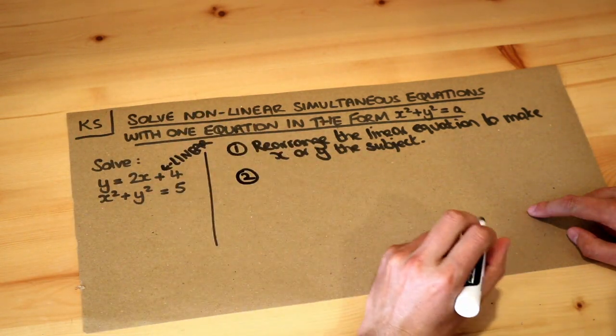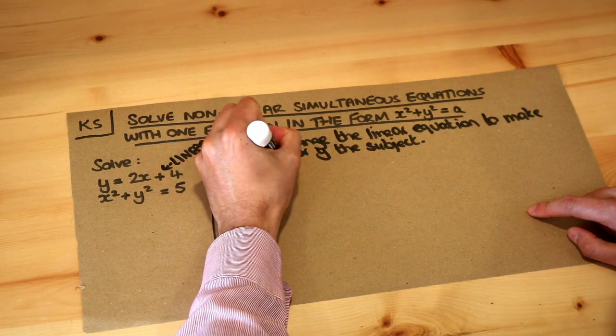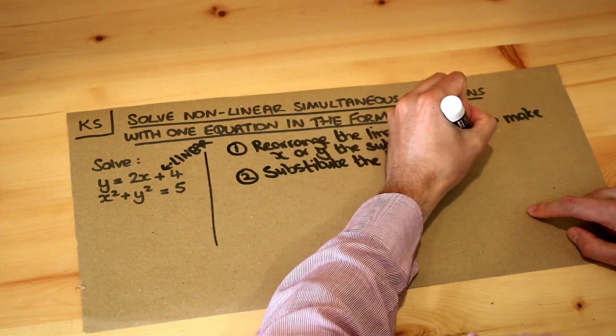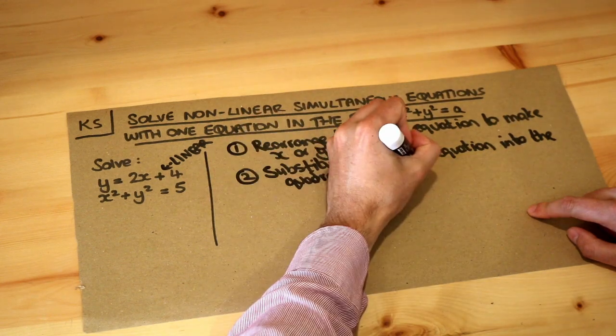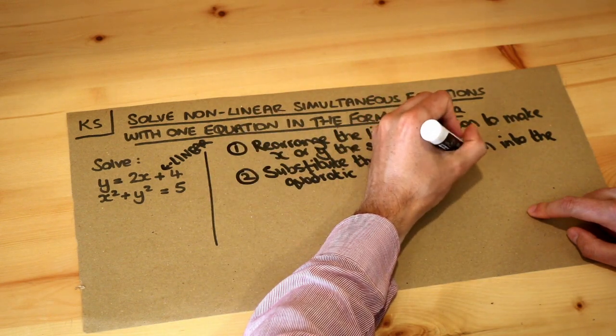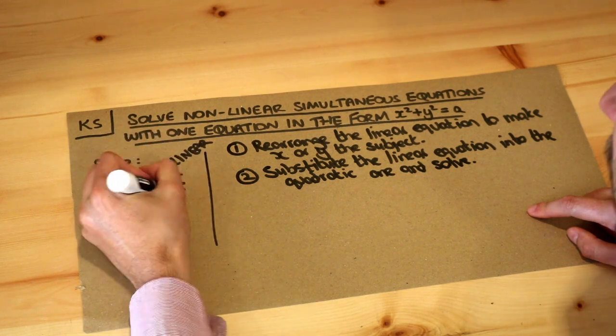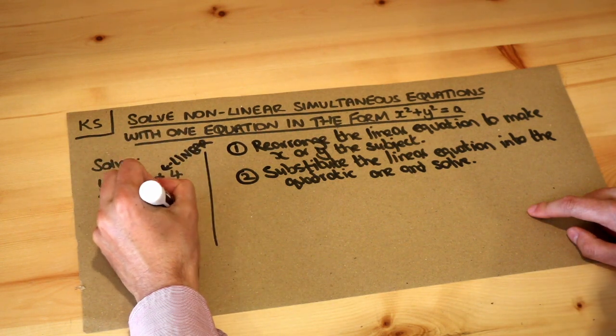Secondly, substitute the linear equation into the quadratic one and solve. Now what do I mean by that? Well I'm going to substitute the linear equation into the quadratic one, which is the second one with the squares in it.